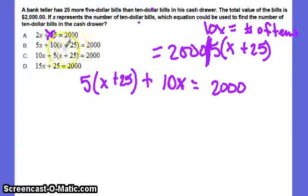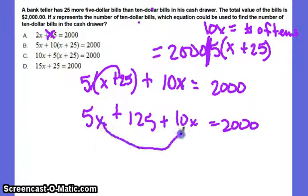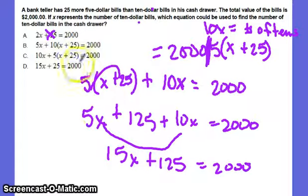This does not equal this. Let's see, we've got 5 times X, which is okay. This would be 5 times X, and this would be 125 plus 10X equals 2,000. So this is another possibility. And if they combine the like terms, we'd have 15X plus 125 equals 2,000, so those would work. They've got 10 times X plus 25, and that's just not where we needed that. We needed this X plus 25 over here with the 5, so this is not correct.